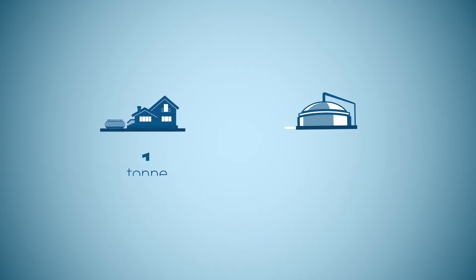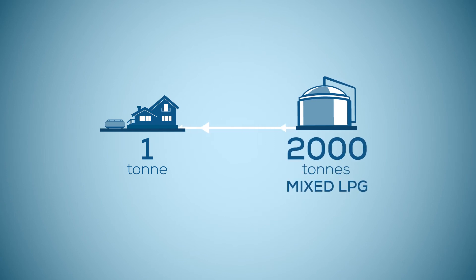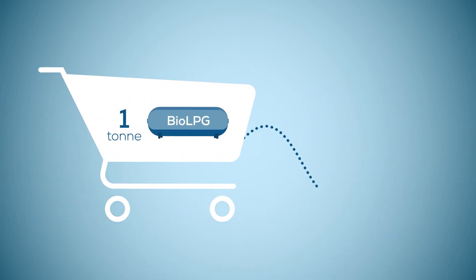When one of our customers orders 1 tonne of Bio-LPG, this will come out of those 2,000 tonnes of mixed LPG. However, the 1 tonne is allocated from the 200 tonnes of Bio-LPG. In short, when the customer orders 1 tonne of Bio-LPG, they will receive mixed LPG product.